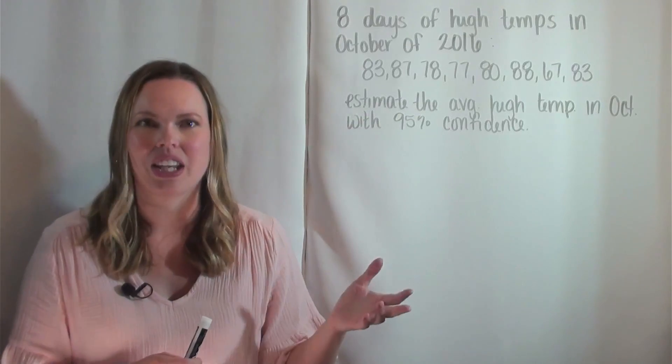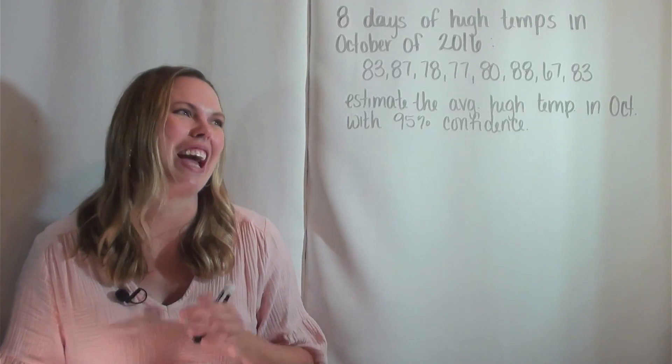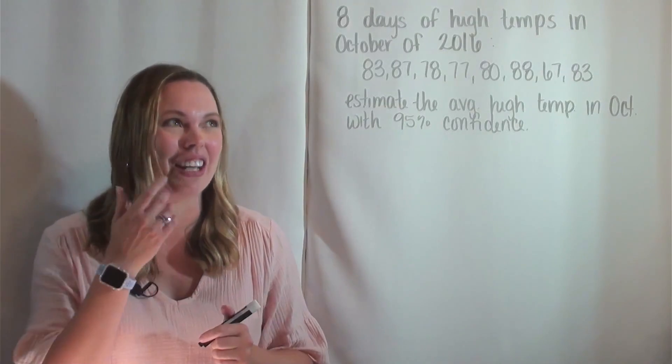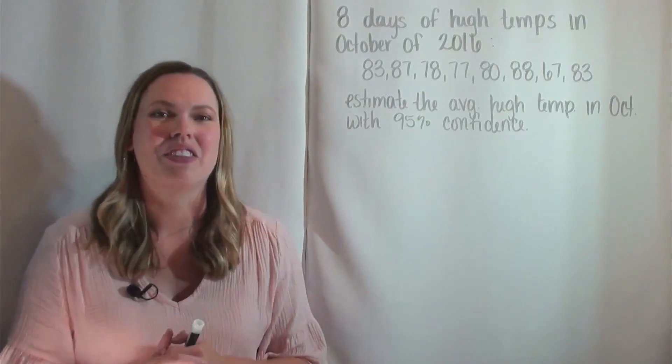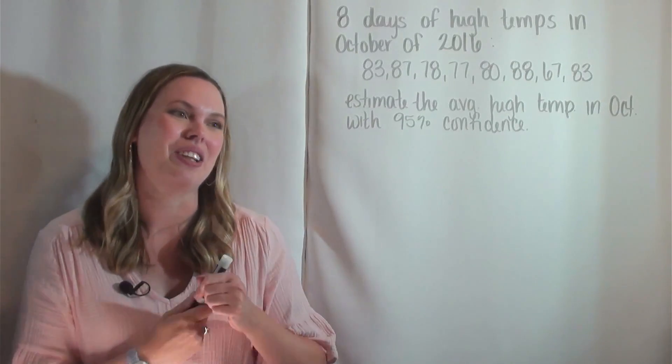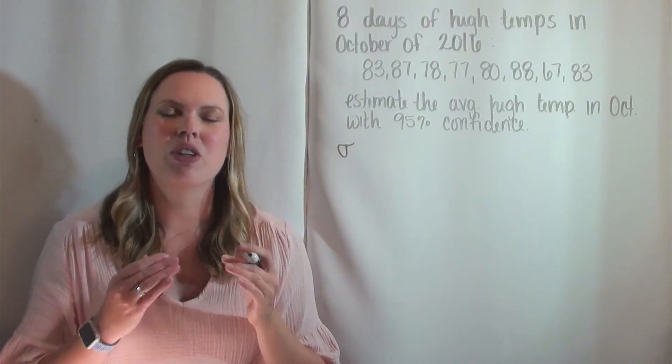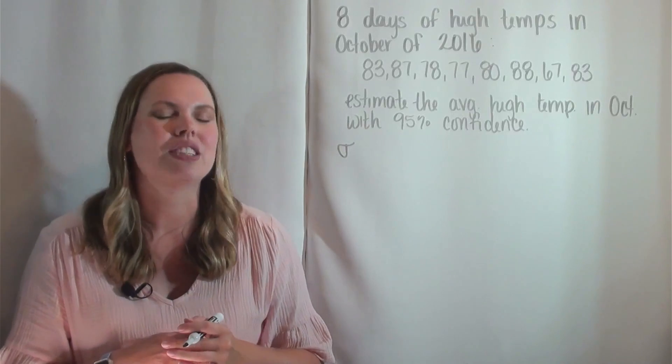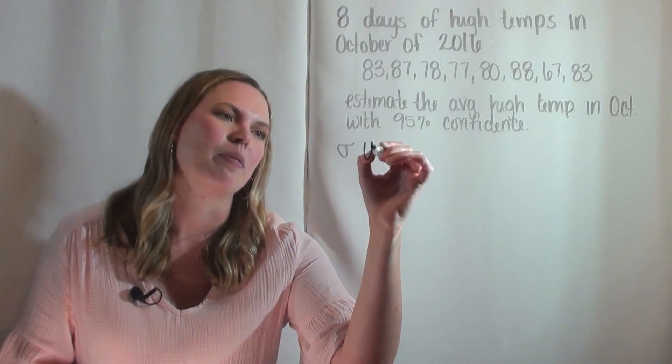Obviously, sigma is unknown here. We're just given raw data and nothing else except for the level of confidence. If sigma is known, it corresponds to the Z distribution or the normal distribution, and it is different than when sigma is unknown.